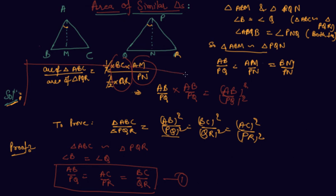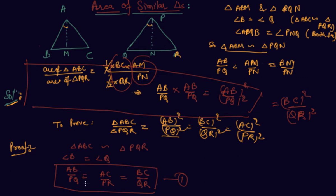So this comes out to be AB upon PQ squared — which is exactly what we wanted to prove. The ratio of area of the two triangles is equal to the square of ratio of their corresponding sides. Similarly, we can prove for BC to QR: this is also equal to BC² upon QR². Replacing AB by PQ to BC by QR, and similarly for AC by PR, hence proved that the ratio of area of two similar triangles equals the square of ratio of their corresponding sides.